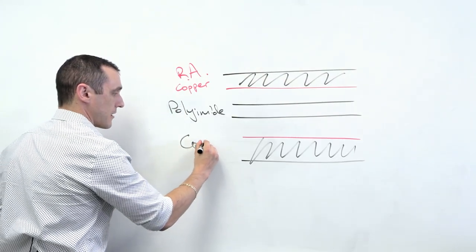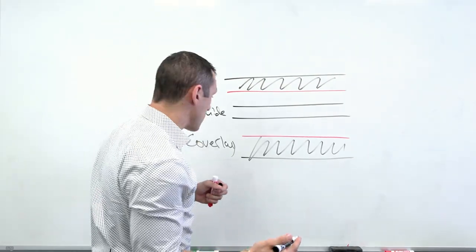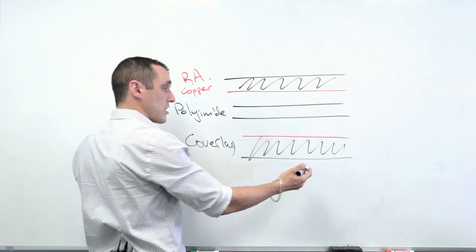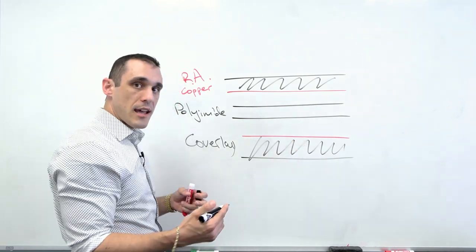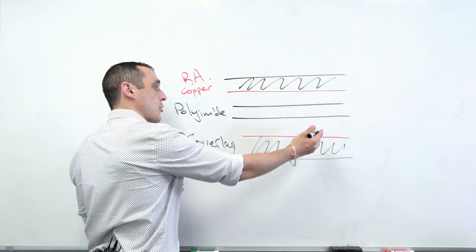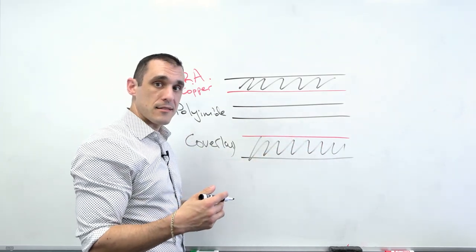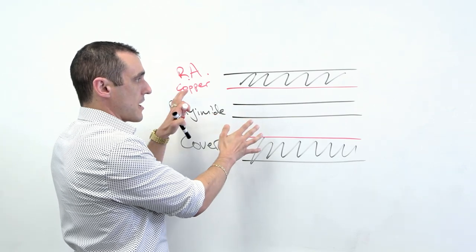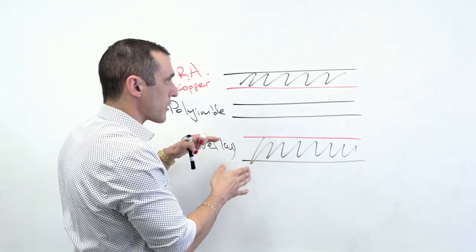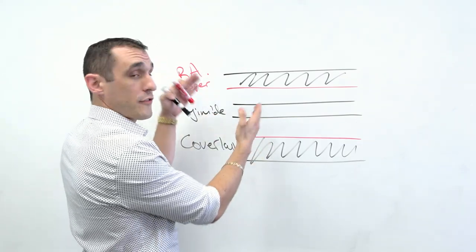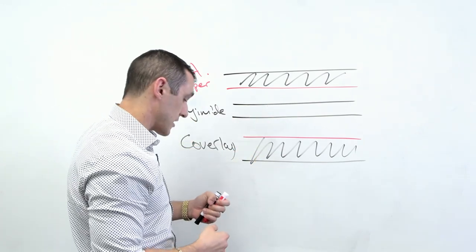And then we'll have another polyimide layer on top of that. And this is our cover lay. So cover lay essentially provides the same function as solder mask. Eventually holes will be etched into the cover lay, and those holes will expose pads in the copper layer, and then you can solder components onto those pads. So this is the flex layer stack that you would see for a two layer flex PCB, or in the flex section of a rigid flex PCB.